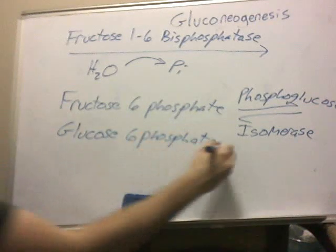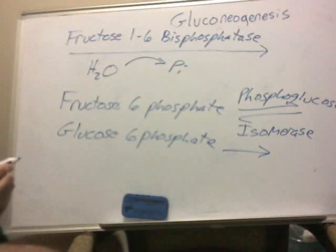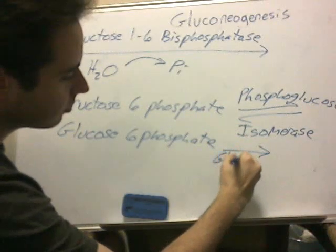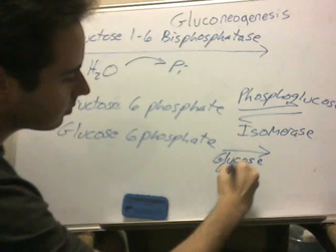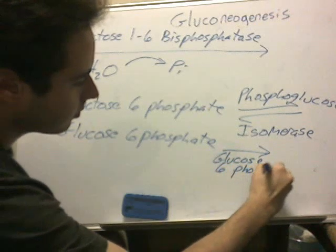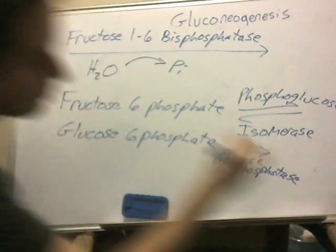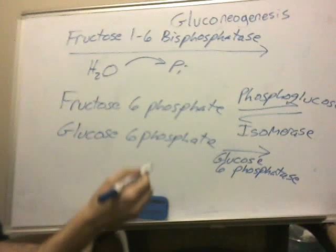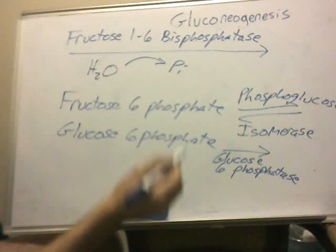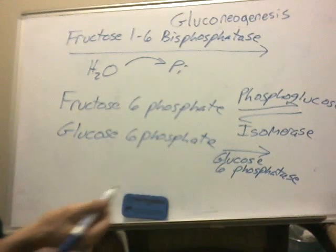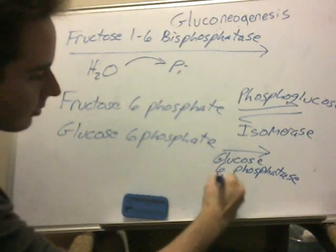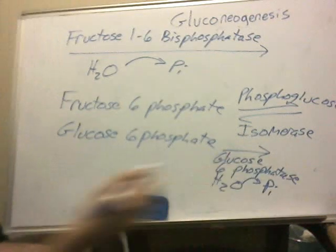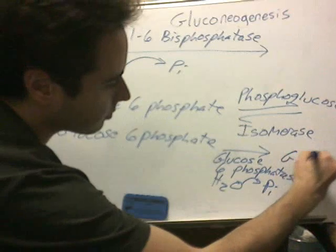So we're almost there. We need to take that phosphate group off with glucose 6-phosphatase. You can abbreviate it as G6Pase if you want. That's also going to require water — you need the water for the phosphatase — and it's going to take the inorganic phosphate off. And you're left with your product: glucose.